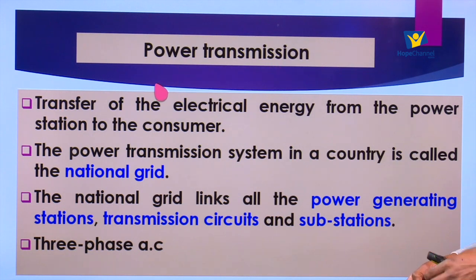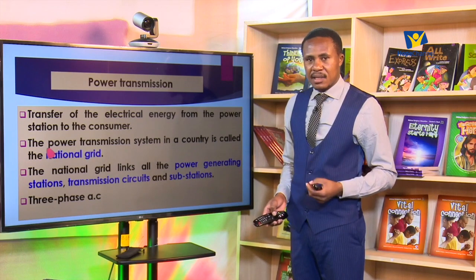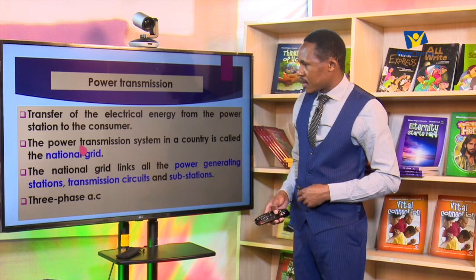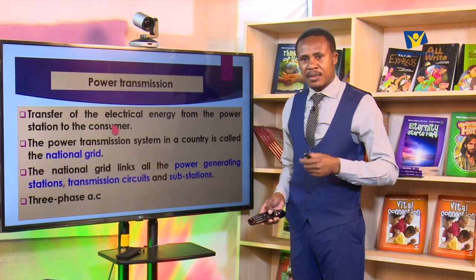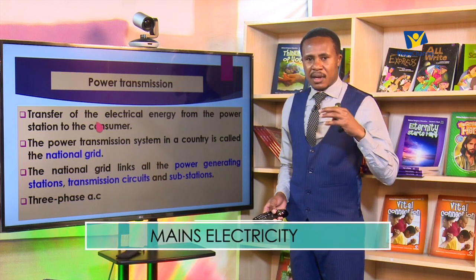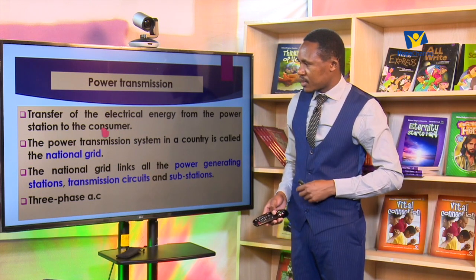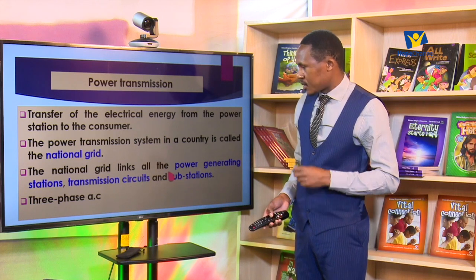Consumers can be our homes, schools, hospitals, shops, or any other place where electricity is going to be used. During transmission the power from the generating plant is fed into a national grid — the power transmission system in a country. We have different generating plants: one in Ngong using windmills, another at Masinga Dam using moving water, Olkaria and many more. After generation, all those power plants are interlinked, joined to the same connection grid. The national grid links all the power generating stations, the transmission circuits, and the substations in a given country.